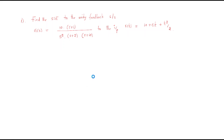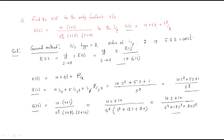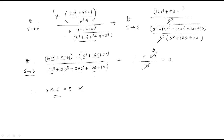This is the general method, but it is a very lengthy method. If you observe, the system type is 2 and the maximum order of the input is also 2 (t²/2 term). That's why we have a finite steady state error constant, and we obtained the steady state error value of 2. Now we will use a shortcut second method.